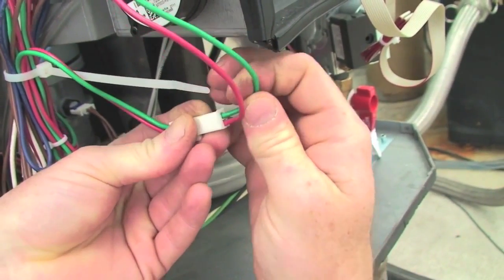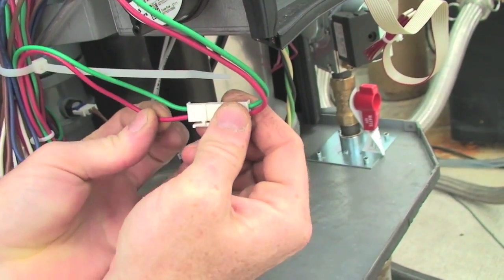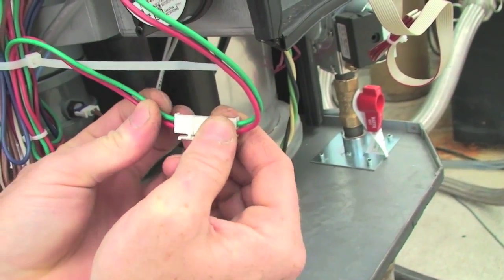Second, if the condensate lines are not blocked, then check the wiring to assure that the wiring is not loose inside the connectors.